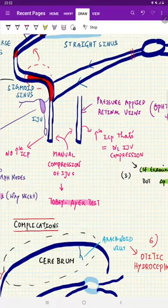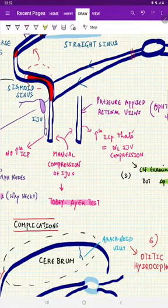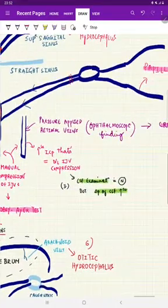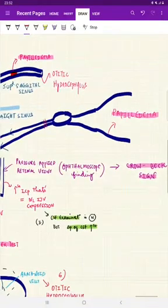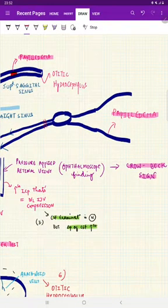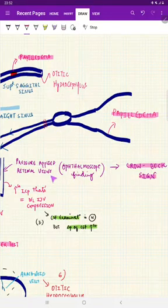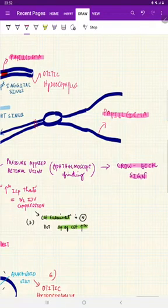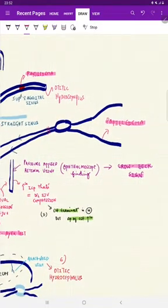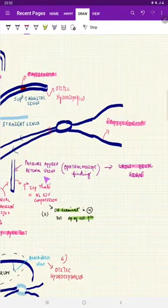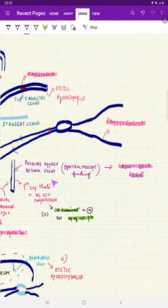Coming to Crowe-Beck sign, this is very simple. As we already said, the pressure which we give on the internal jugular vein, we can see the engorgement of the retinal vein through ophthalmoscopic findings. That is called Crowe-Beck sign. So you give pressure on the IJV and we can see the retinal vein getting engorged. This is called Crowe-Beck sign.